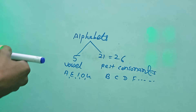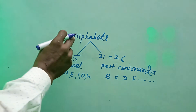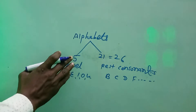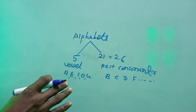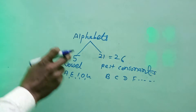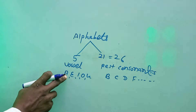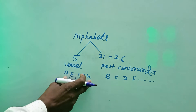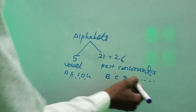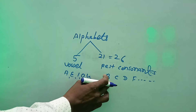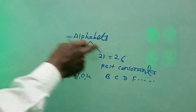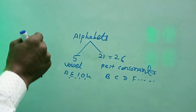Hi, this is English Sir. Today I am going to teach you alphabets. Alphabets are 26 in number — five are vowels and the rest are consonants. The five vowels are A, E, I, O, U, and their number is five. The rest are consonants, and their number is 21. So 21 plus 5 is 26 — total alphabets is 26.